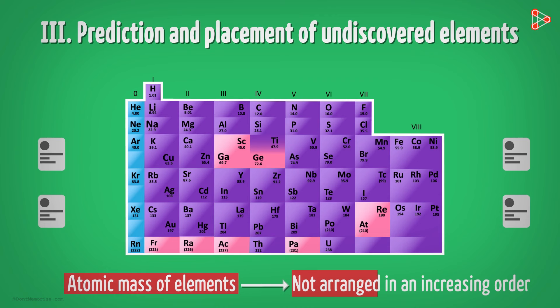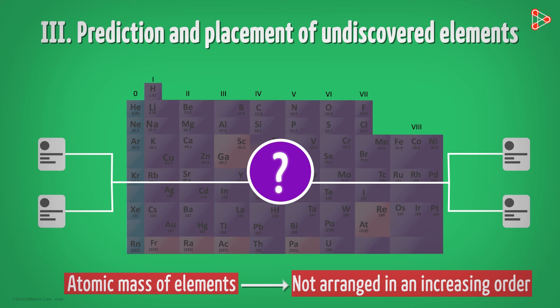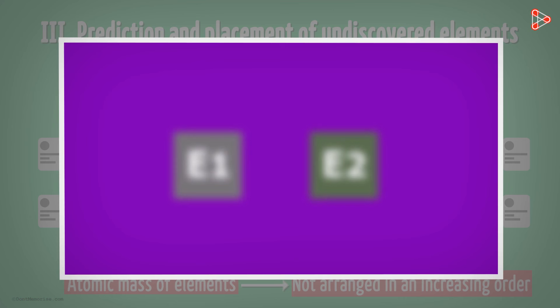It's simply because if the atomic masses of previously discovered elements were not in a regularly increasing manner, then how and where will we place the new ones? Just for the sake of understanding, let us assume some values for the atomic masses of two elements. Element 1 has atomic mass 300 whose position comes first. While element 2 has an atomic mass 297 which is placed later in the table, i.e. after element 1.